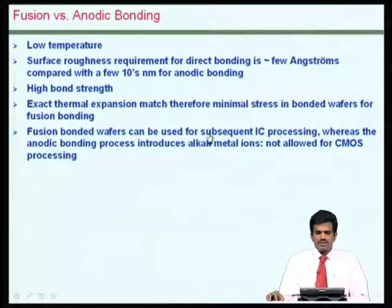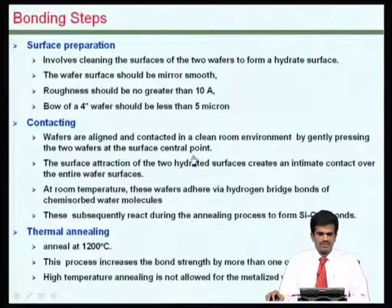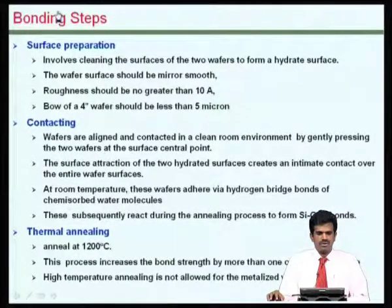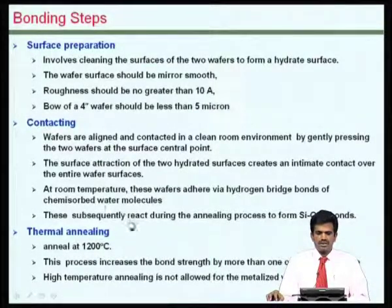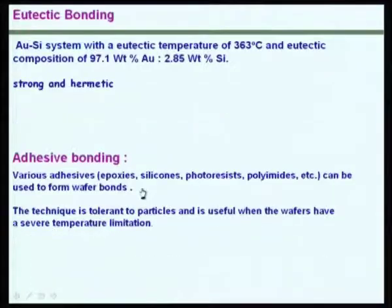These wafers can be used in IC processing, and many CMOS processes could be applied because you have silicon wafers on both sides. Controlling the surface roughness and the bow of the wafer are key factors in the success of bonded wafers by this approach. After that, just like putting two glass pieces together, you make them contact, apply temperature, and bond them together. Usually we anneal at a higher temperature so that a permanent contact is made.